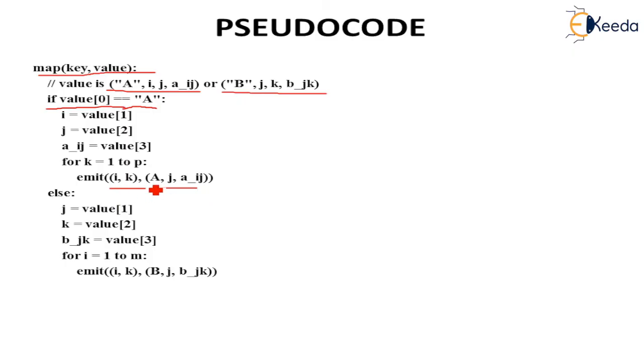If it is not A, definitely it is going to be B. This will be for B: J equals value[1], K equals value[2], and B(j,k) equals value[3]. For I equals 1 to M, we are creating the key and value here. So I,K is created in both cases, and here the value is created B,J and B(j,k). This is how we create two separate matrices.